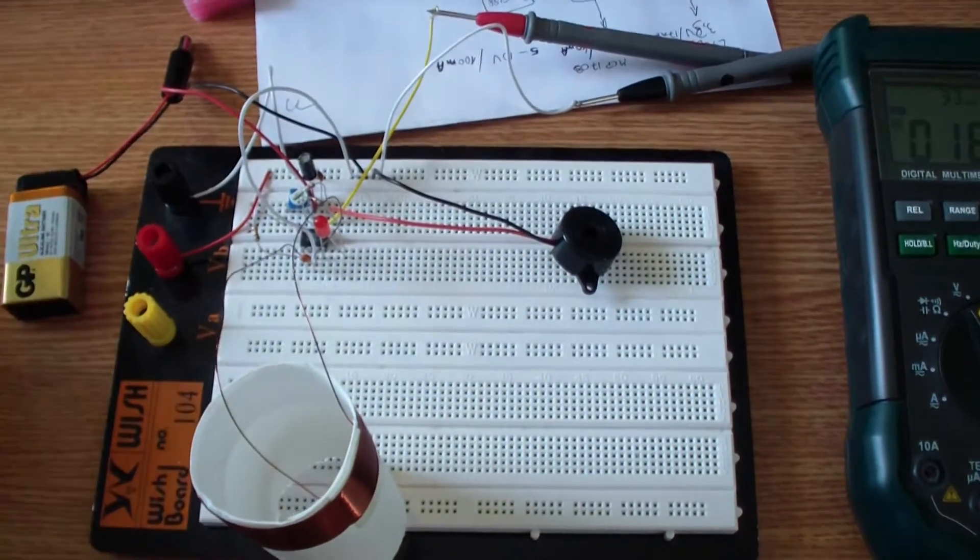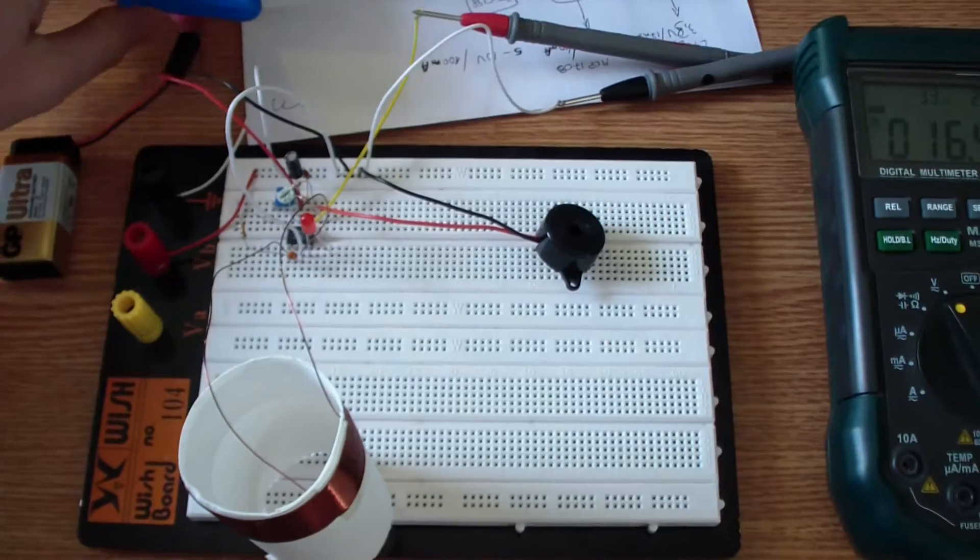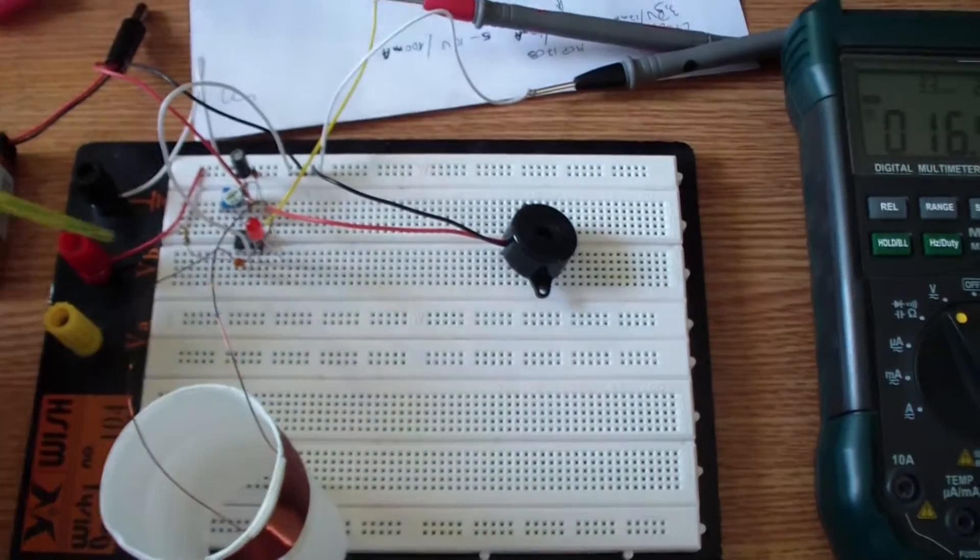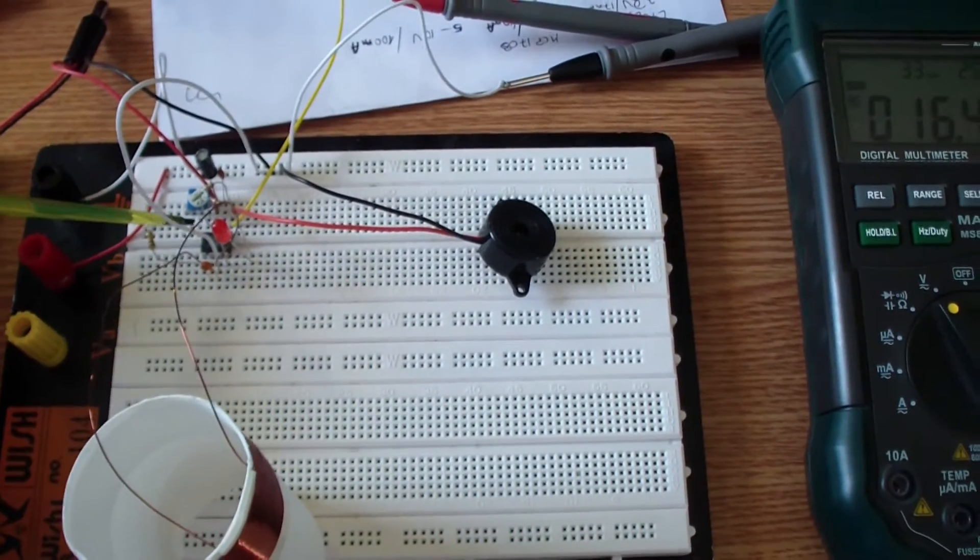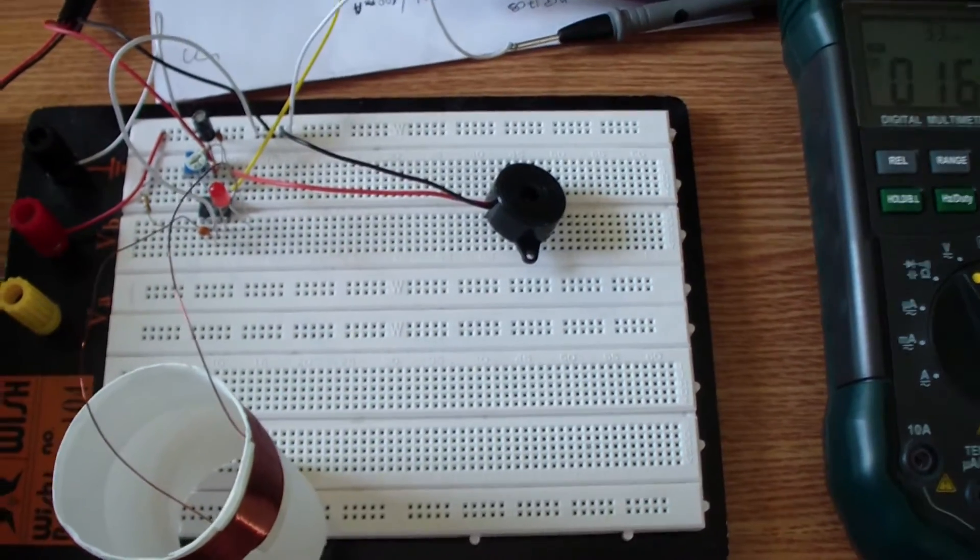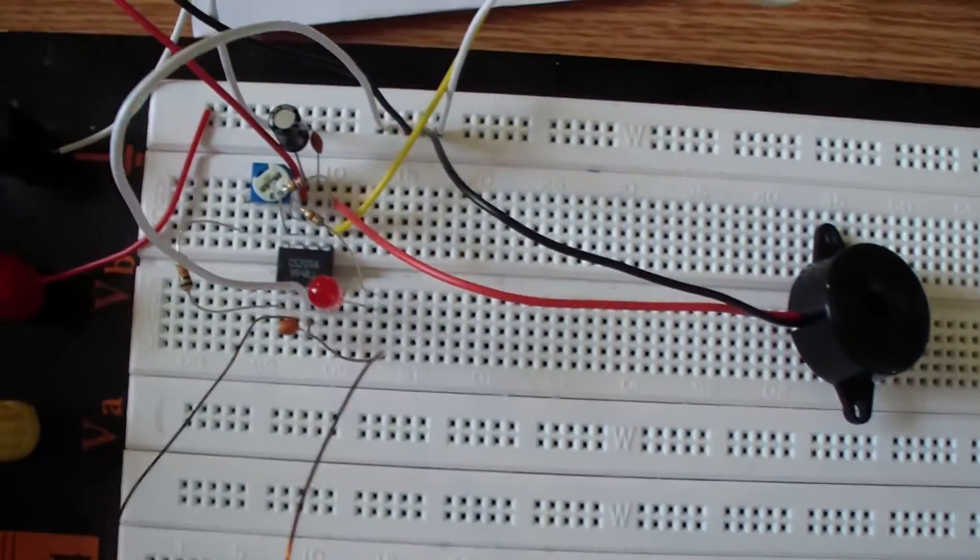Hi guys, I am Marian from electroschematics.com and here I have the metal detector connected on a breadboard. It is built with CS209A integrated circuit, it is a dedicated metal detector and proximity sensor.